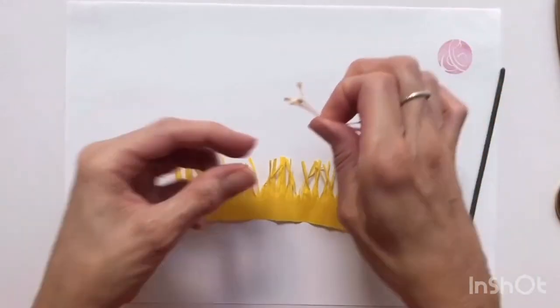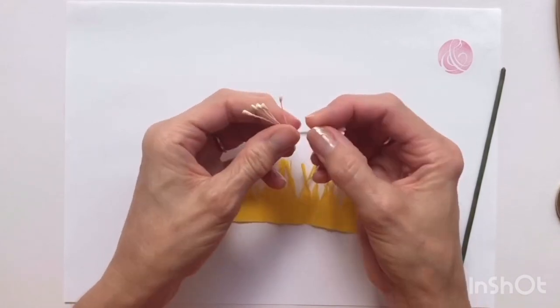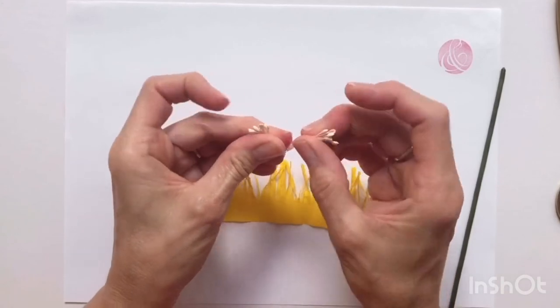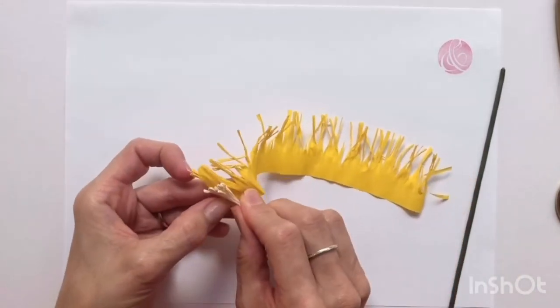In your kit you'll find these little stamen here. What you want to do is fold those in half like that and place them at one end of the little roll.